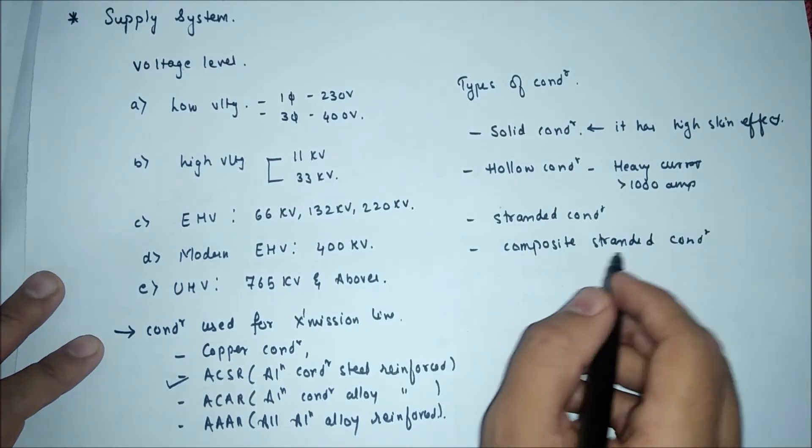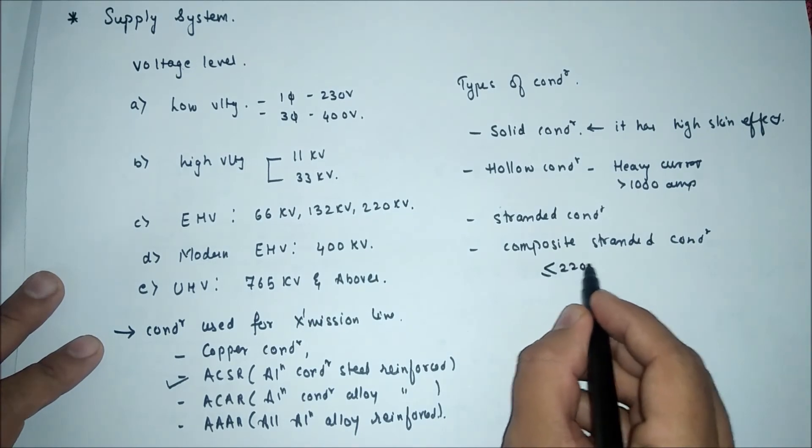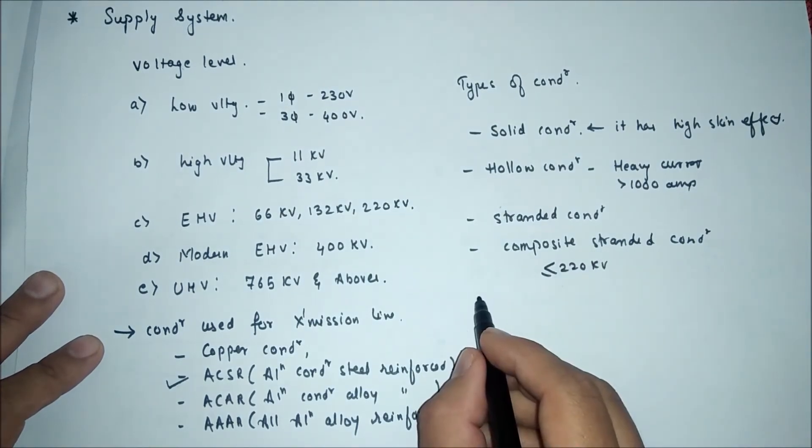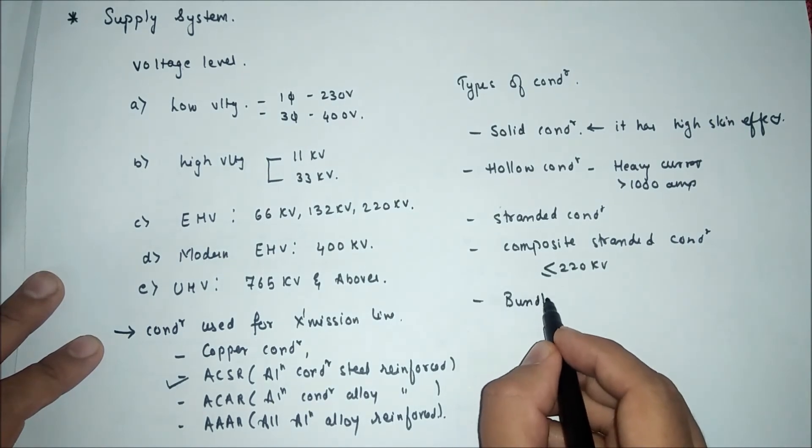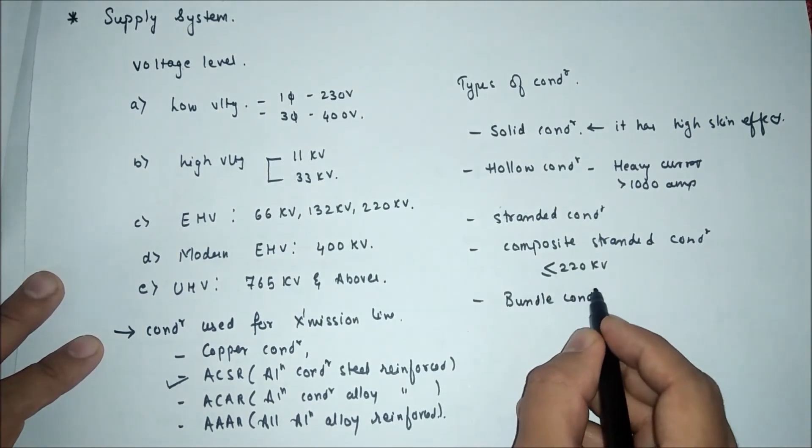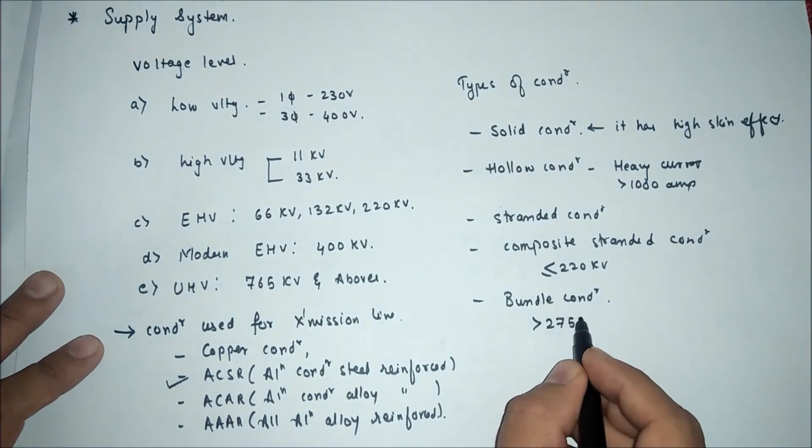This stranded conductor is used less than or equal to 220KV and last one is bundle conductor which is used for greater than 275KV.